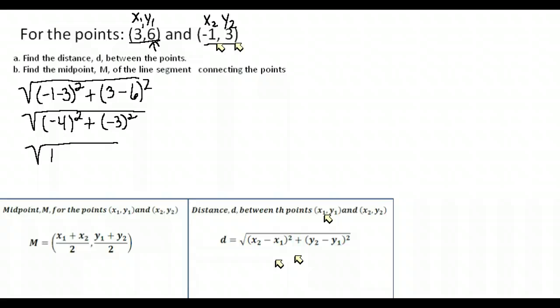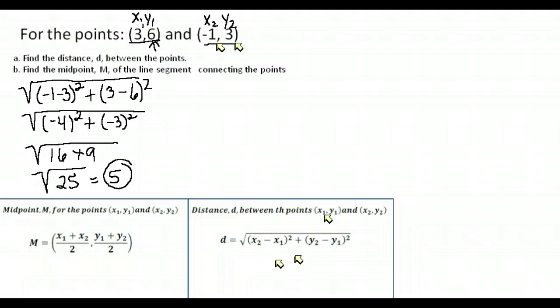Negative four squared is positive 16, and negative three squared is positive nine. You should always get positive numbers at this step because squaring removes the negative. Now we add: 16 plus 9 is 25, and we take the square root. You won't always get a perfect square — if not, just leave it in root form — but in this case it works out. The distance between the two points is 5.